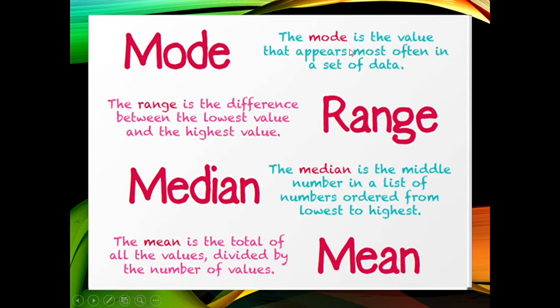the mode is the value that appears most often in a set of data. When we say range, the range is the difference between the lowest value and the highest value of the given data.